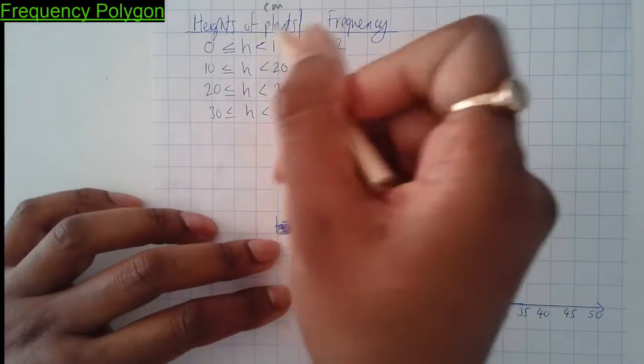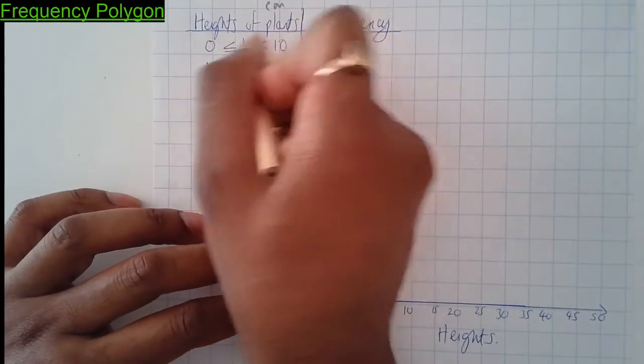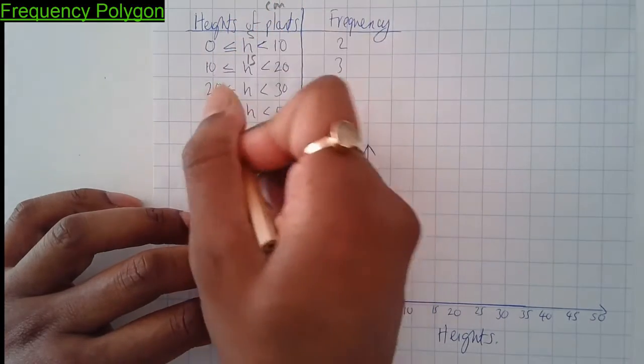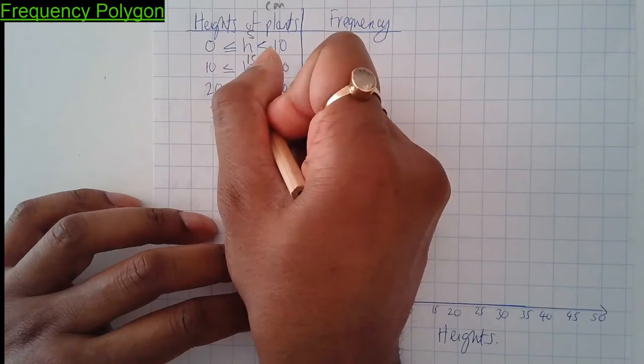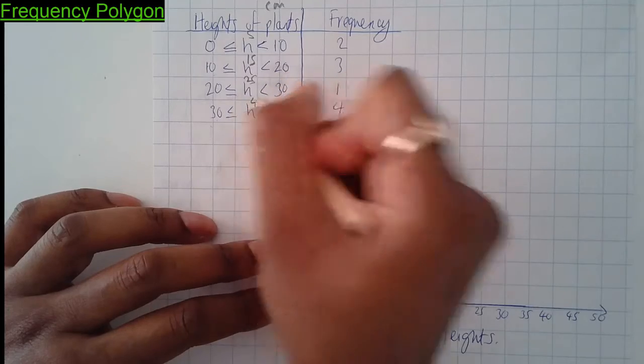So what you do is for a frequency polygon you need to find the middle of these numbers. The middle of 10 and 20 is 15, 20 and 30, middle number. At the middle of 30 and 50, 30 and 50 is actually 40, check.